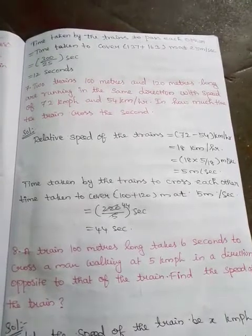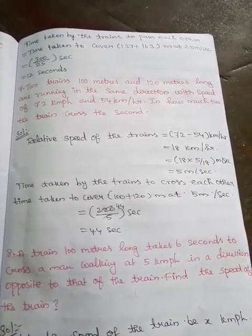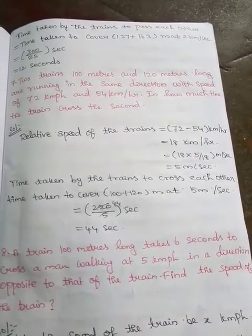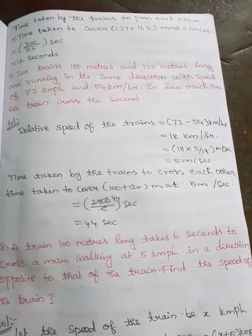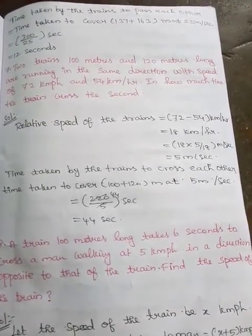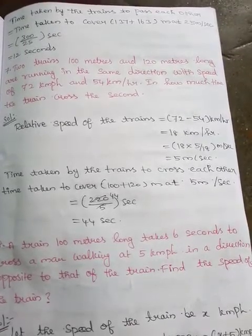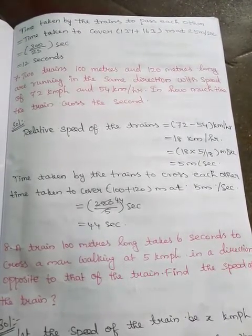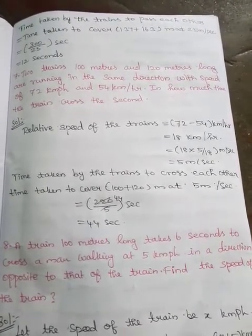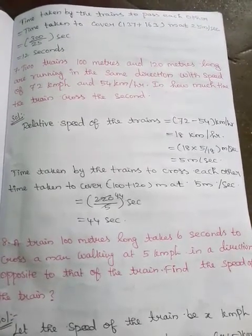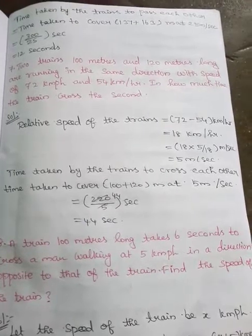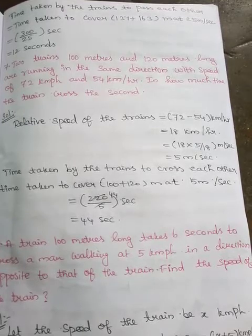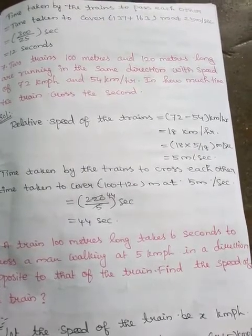Problem 7: Two trains 100 meters and 120 meters long are running in the same direction with speeds of 72 km per hour and 54 km per hour. Relative speed of the trains equals 72 minus 54 km per hour, equal to 18 km per hour.